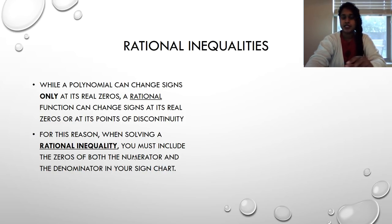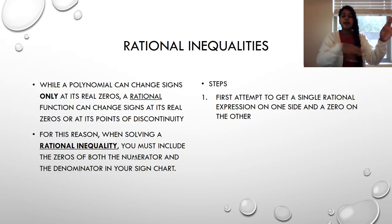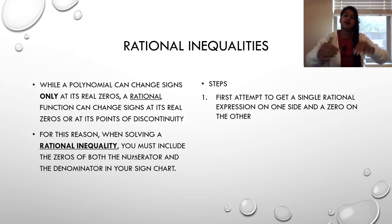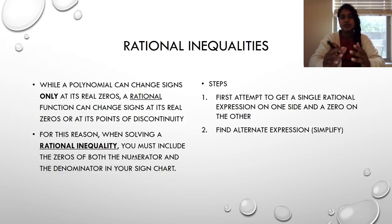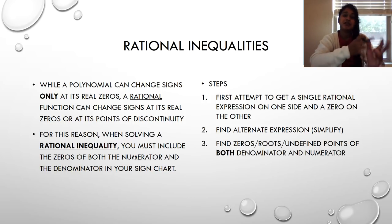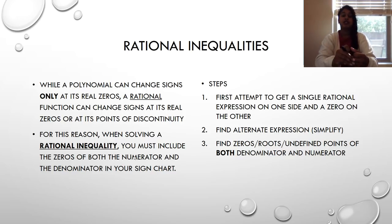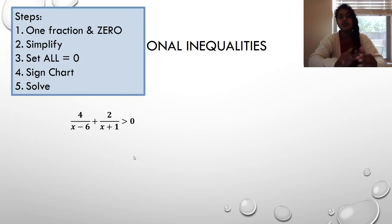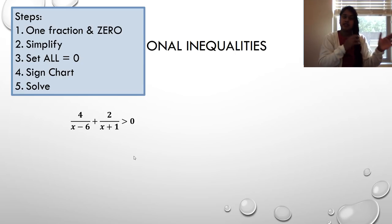So take a moment, take a photo, copy this down. Step one: get one fraction and get a zero. Step two: simplify. Step three: set the numerator and denominator equal to zero. Then use a sign chart and solve. The only difference now is fractions — that's it.